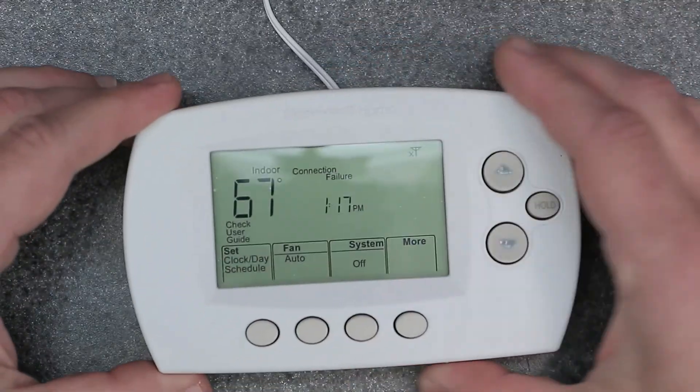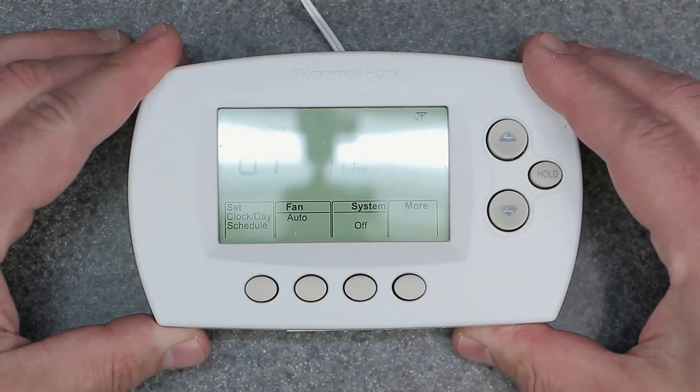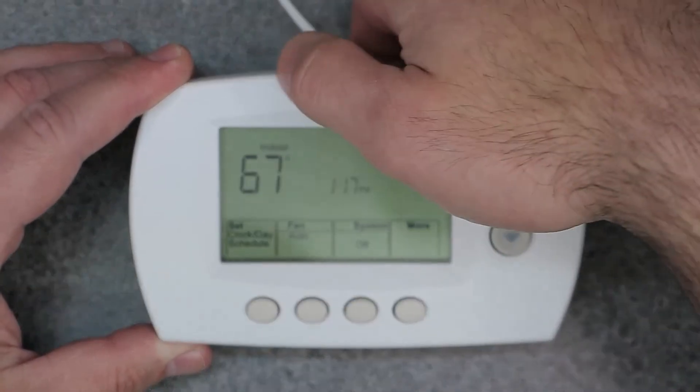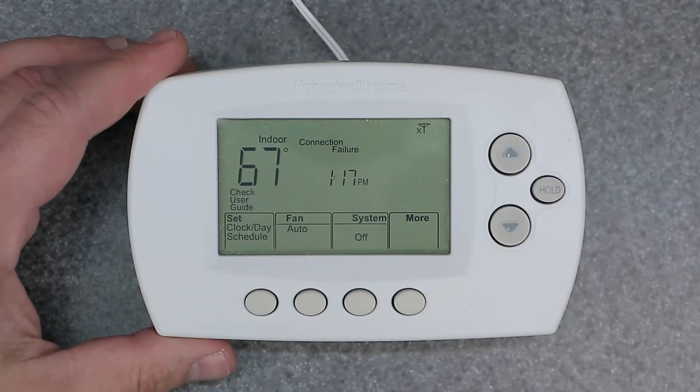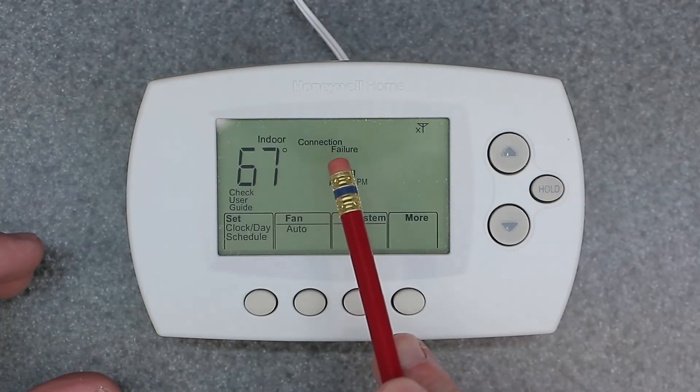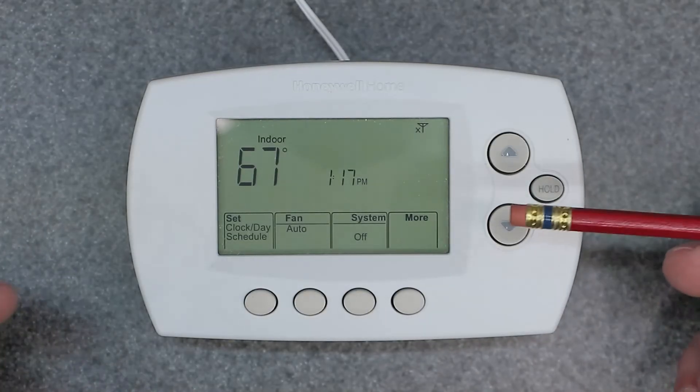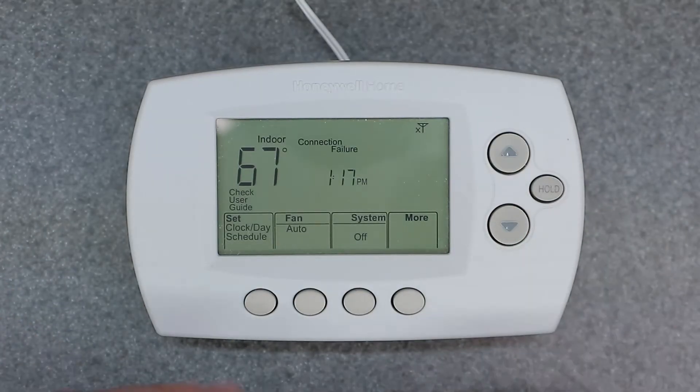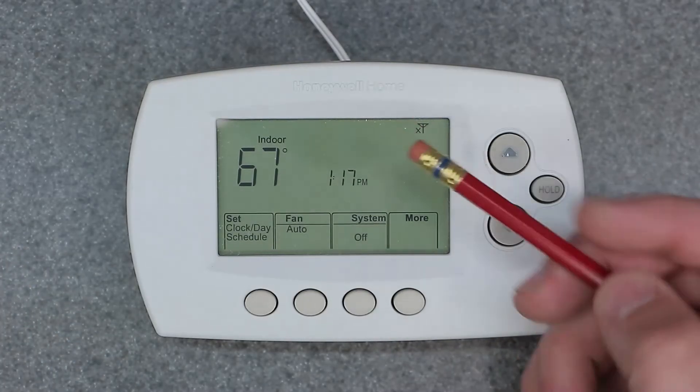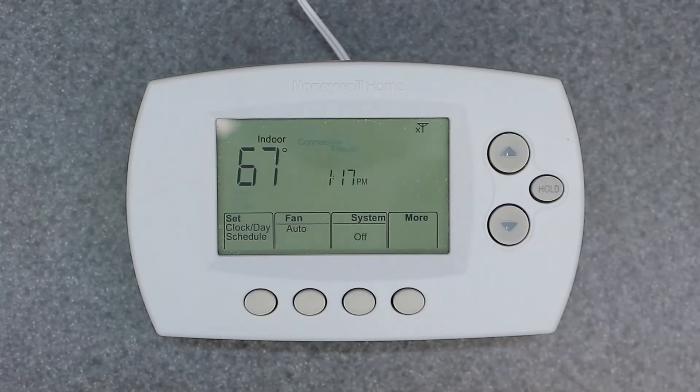Alright, so that there is the thermostat. I just want to go ahead and show you something. So as you see here we have connection failure and we have the antenna. That's what I was talking about. It can be annoying if you have the Wi-Fi on and you have it turned on and not using it. Or if you factory reset the device, it's going to go back to this.